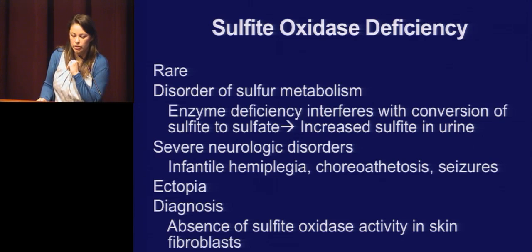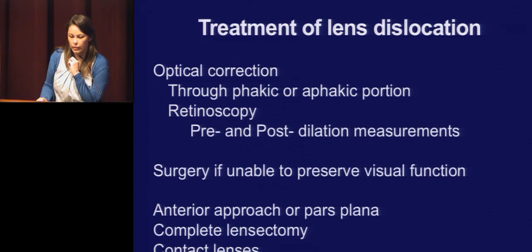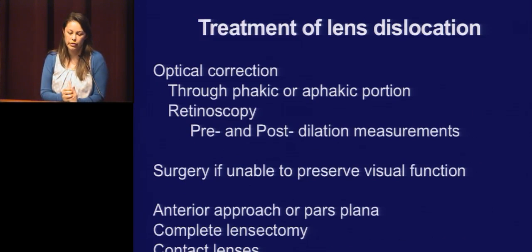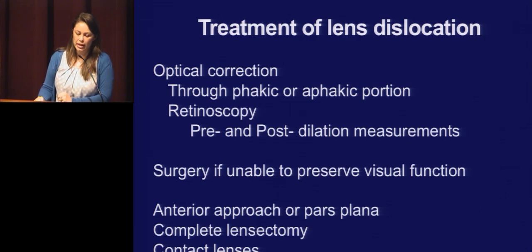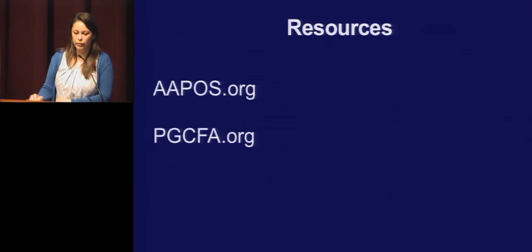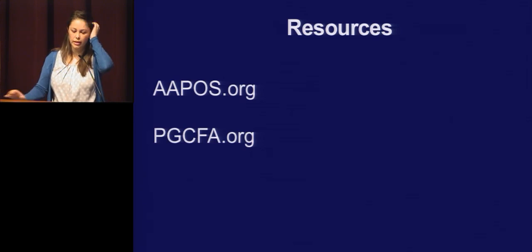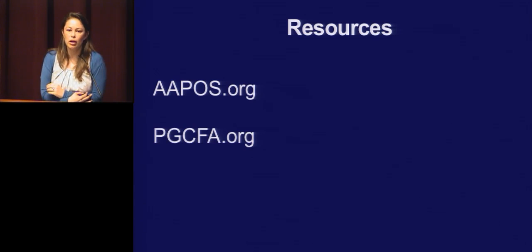For treatment of lens dislocation, refract through both the phakic and aphakic portion of the visual axis, and test pre and post dilation. Do surgery if you're unable to preserve visual function. You want to do an anterior approach or pars plana depending on the situation. Do a complete lensectomy and remove the capsule as well. These patients will use aphakic contact lenses — sutured IOLs have a high rate of suture breakage and dislocation in these patients.